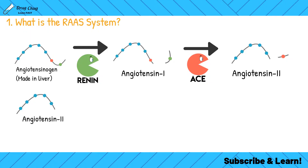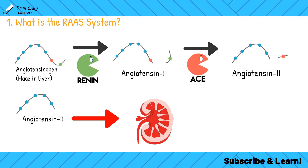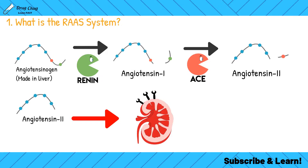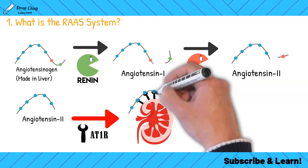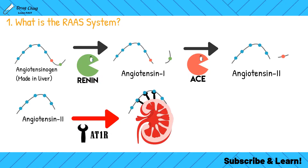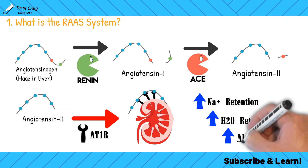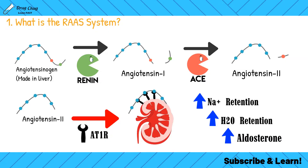Once angiotensin 2 is made, it circulates and goes to our kidneys, where we have angiotensin 1 receptors — AT1R — that angiotensin 2 binds to. Once this connection happens, we get an increase in sodium retention, an increase in water retention (since water always follows sodium), and an increase in aldosterone, which is an anti-diuretic hormone that prevents urination. So we get a lot of water buildup due to angiotensin 2.